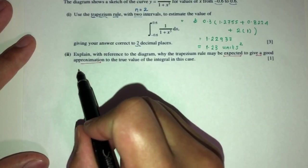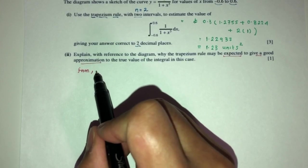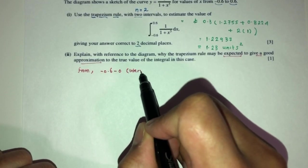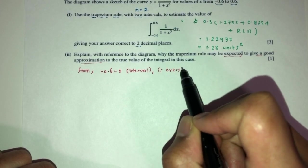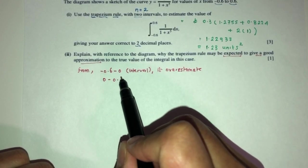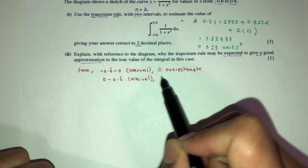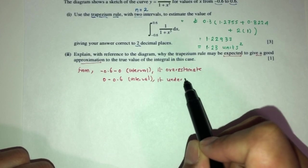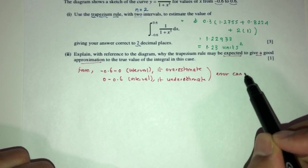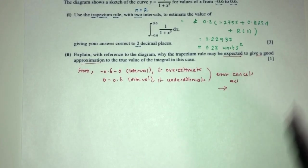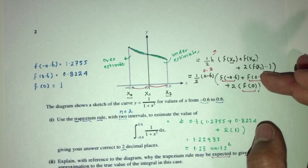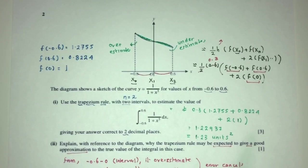We can write: from the diagram, for the interval −0.6 to 0, the trapezium rule overestimates; and from 0 to 0.6, it underestimates. The errors cancel out, providing a good estimation for the area of this integral. That is question number 2 — the main point is using the formula and observing the diagram.